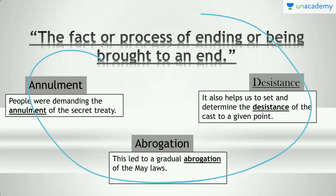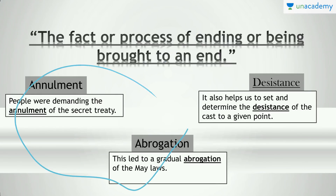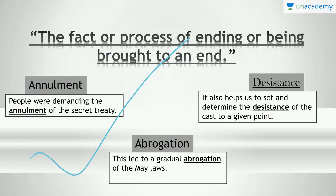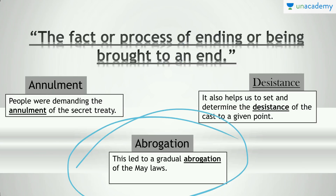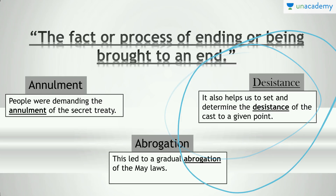Then there are: 'annulment,' 'abrogation,' and 'desistance.' 'People were demanding the annulment of the secret treaty' — asking for it to be brought to an end. 'Abrogation': 'This led to the gradual abrogation of the mail-off' — abrogation and cessation are used when something has already ended. 'Desistance': 'It also helps us to set and determine the desistance of the caste to a given point.' If you have questions, let me know and I'll review your examples.